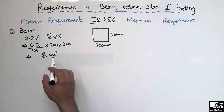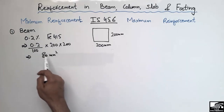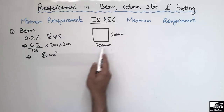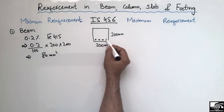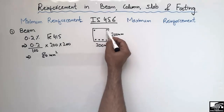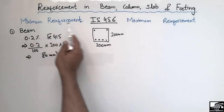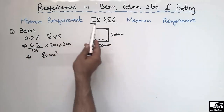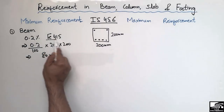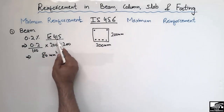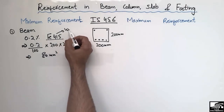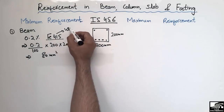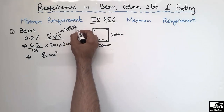After multiplying, we get a value of 80 square millimeters. So the minimum reinforcement of 80 square millimeters should be provided in this beam in order to have ductile behavior. This is the minimum reinforcement for the beam when using Fe415 grade steel with a yield strength of 415 MPa.